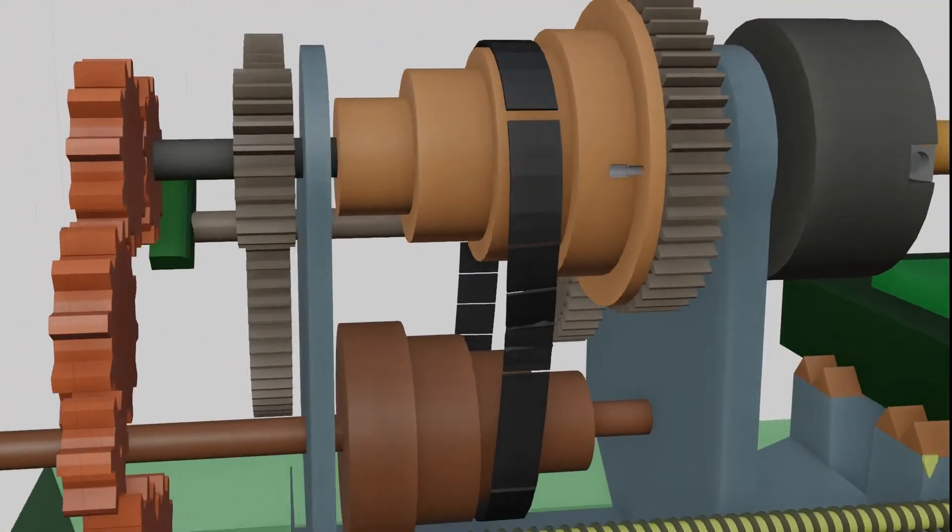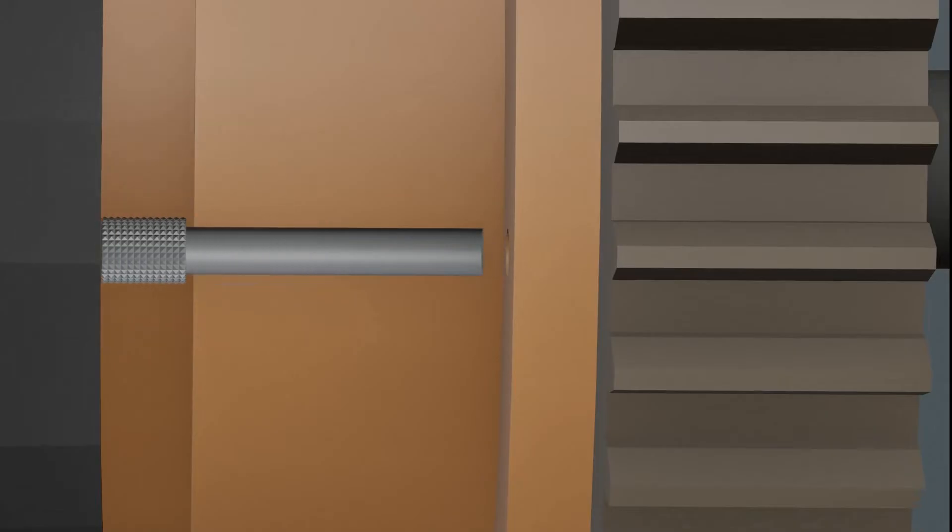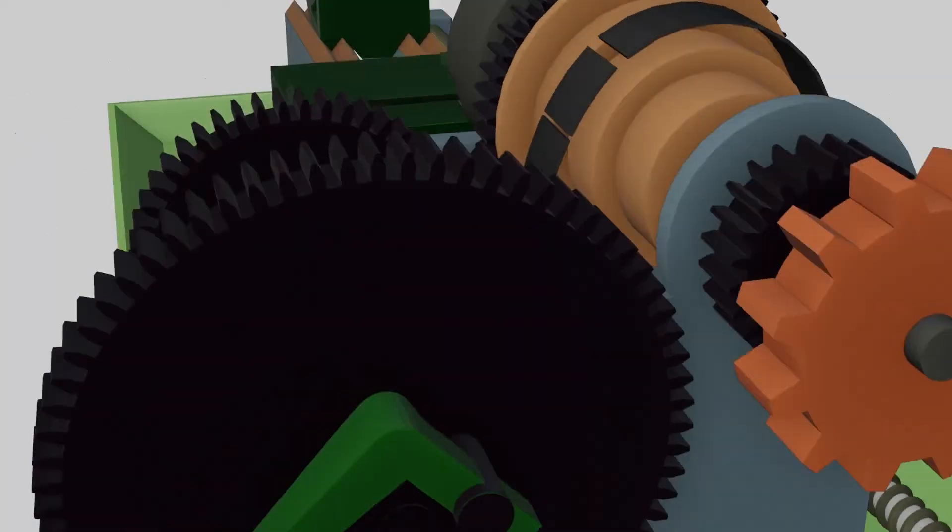Pulley and spindle are connected with connecting pin. We can stop power transfer by removing this pin. Pin should be engaged on step pulley drive.